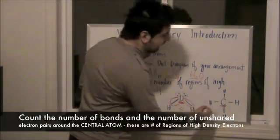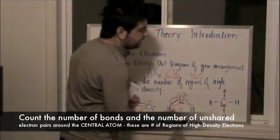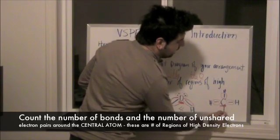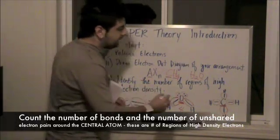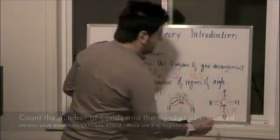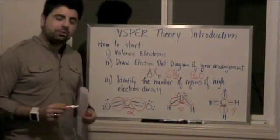And in this last example, our central atom is carbon. We have 1, 2, 3, 4 single bonds circling around it, which means that we have 4 regions of high electron density.